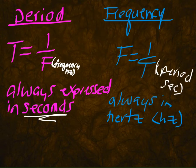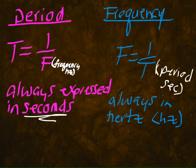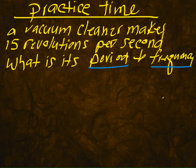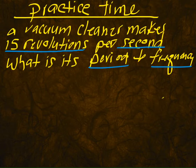So let's use these formulas right now. A vacuum cleaner makes 15 revolutions per second. What is its period and frequency? You have two different things here that you're trying to figure out: period and frequency. The period is the time it takes to complete one full cycle. Do you see a cycle? It says 15 revolutions per second — that really means 15 cycles every second. But a period is one cycle per second.